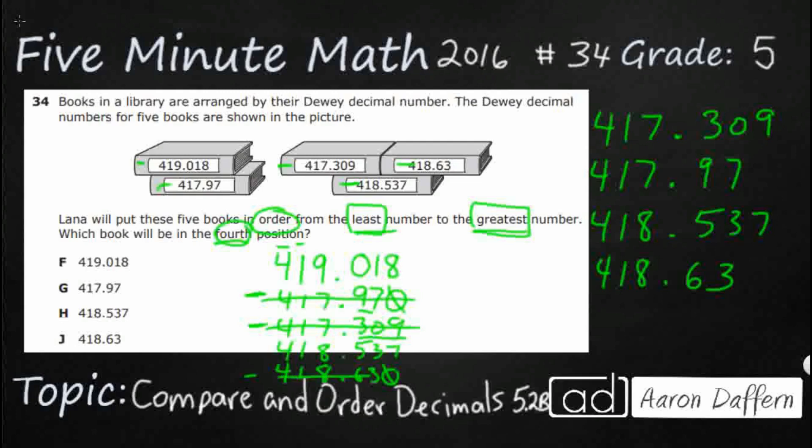And I'm going to end it up with 419.018. I need my 1, 2, 3, my fourth position. And there we go, 418.63. The answer is J.